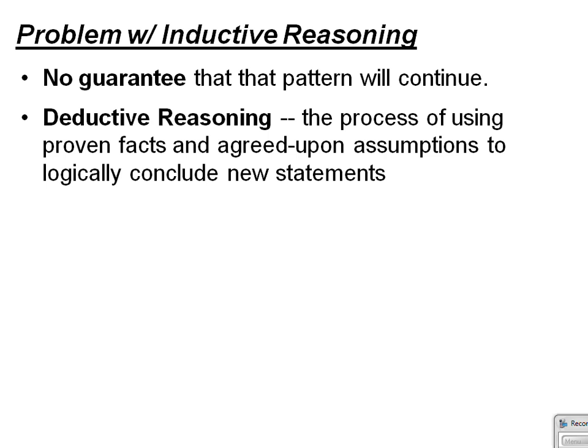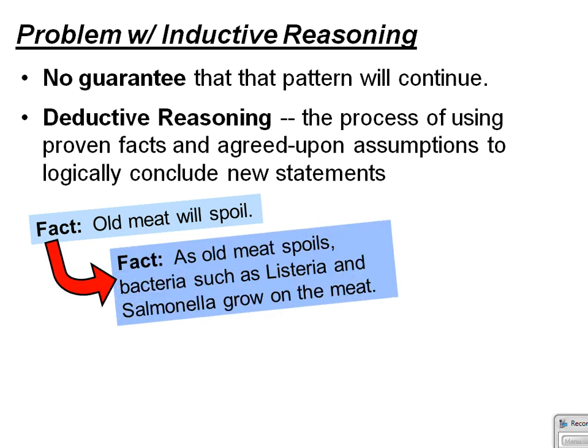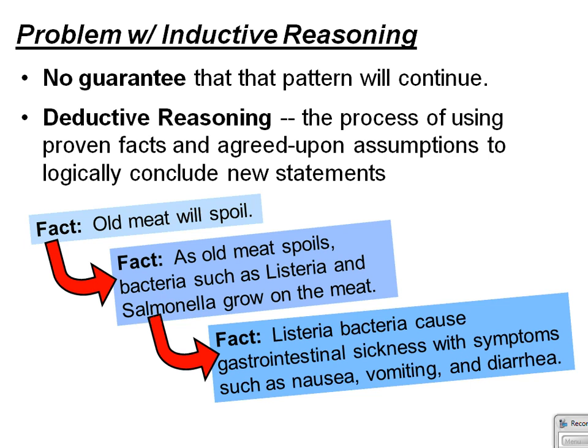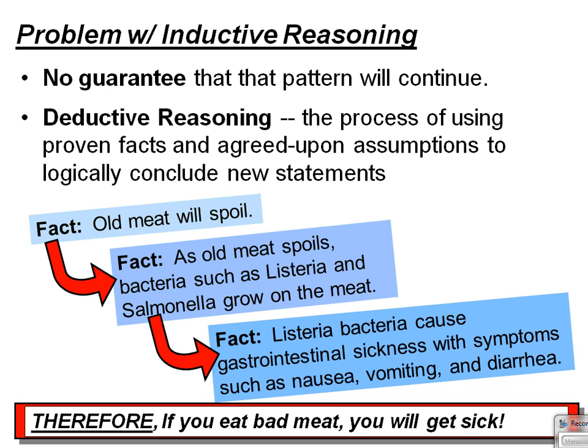You can look up and verify these facts. First of all, old meat will spoil — that's an agreed-upon assumption we've all seen many times and know to be true. In addition, as old meat spoils, bacteria such as listeria and salmonella grow on the meat. That's a fact you can look up in an encyclopedia or online. From those two facts, we can gather a third: listeria bacteria causes gastrointestinal sickness with symptoms such as nausea, vomiting, and diarrhea. Based on these facts, we can conclude that if you eat bad meat, you will get sick.